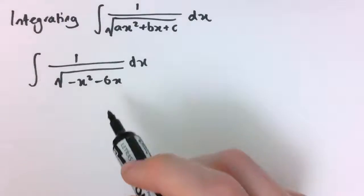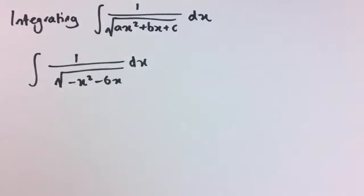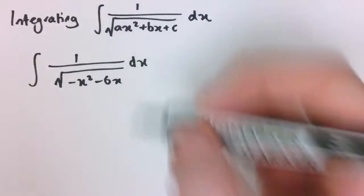What we did before was to complete the square and then use some integration technique, maybe it was an arcsin integral, perhaps we did it in partial fractions. We're going to do the same sort of thing here. We're always going to start by completing the square and then we'll find a way to integrate what we have.